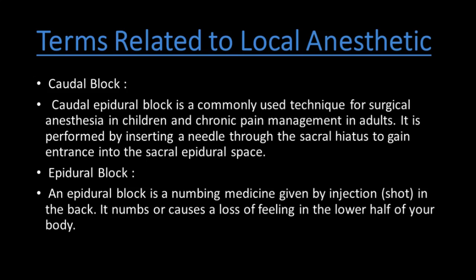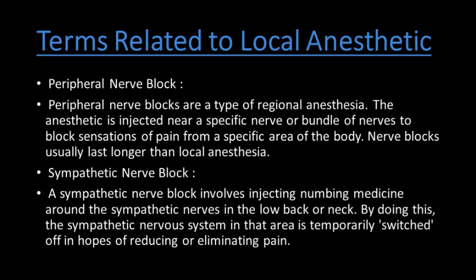Epidural block: a numbing medicine given by injection in the back that numbs or causes loss of feeling in the lower half of the body. Peripheral nerve block: a type of regional anesthesia where the anesthetic is injected near a specific nerve or bundle of nerves, also known as a plexus, to block sensation from a specific area of the body. Nerve blocks usually last longer than local anesthesia.